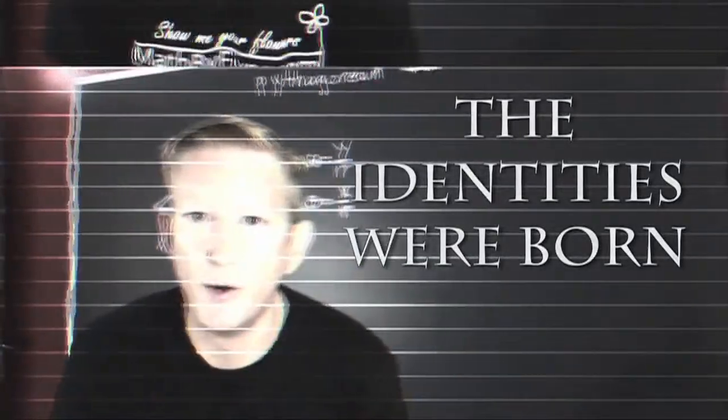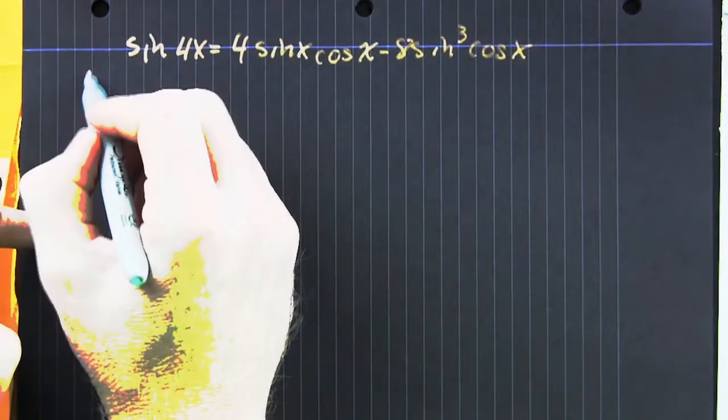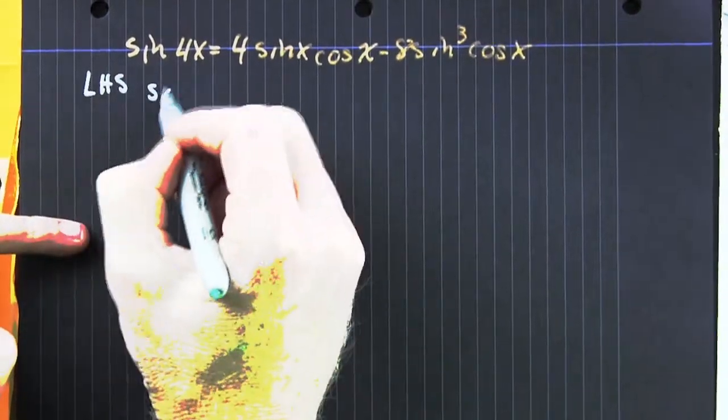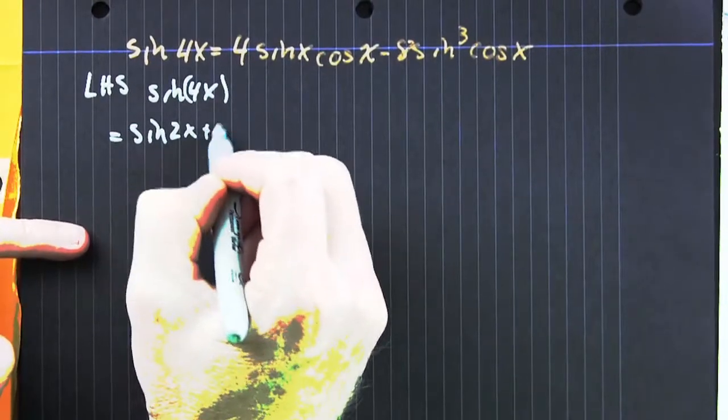And this is where the identities were born. So we want to prove that sine of 4x is equal to 4 sine x cos x minus 8 times sine to the third cosine x.